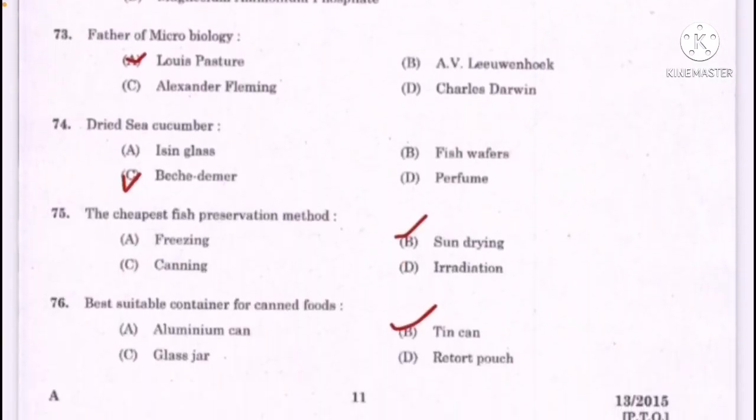Father of microbiology — option A: Louis Pasteur is the correct answer. Dried sea cucumber is — option C: beche-de-mer. The cheapest fish preservation method — correct answer option B: sun drying. Best suitable container for canned foods is — option B: tin can.